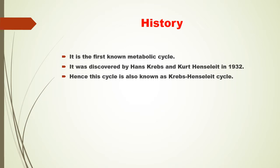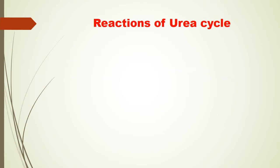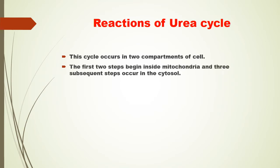Reactions of the urea cycle. This cycle occurs in two compartments of the cell. The first two steps begin inside the mitochondria and three subsequent steps occur in the cytosol. The urea cycle has five events as follows.